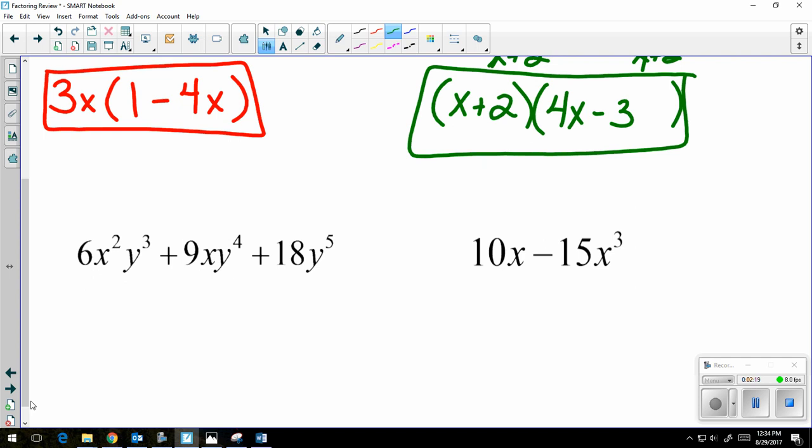Let's take a look at two more examples. 6x squared y cubed plus 9xy to the 4th plus 18y to the 5th. So all three numbers, 6, 9, and 18, can be divided by 3.